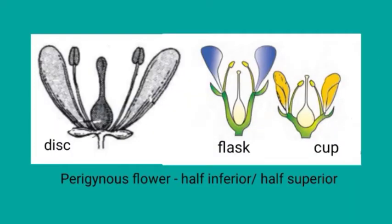Let's check the diagrammatic representation of all three types of perigynous flowers. The first diagram represents disc-shaped perigynous flower; the second represents flask-shaped perigynous flowers; and the third represents cup-shaped perigynous flower with half-inferior or half-superior ovary. Please check these diagrams carefully for better understanding.